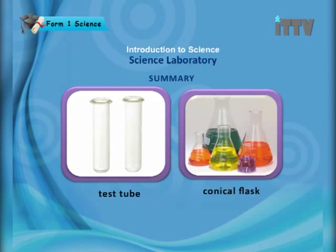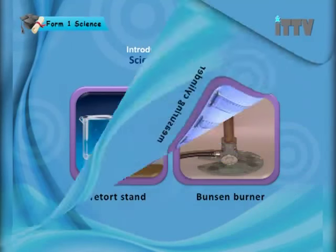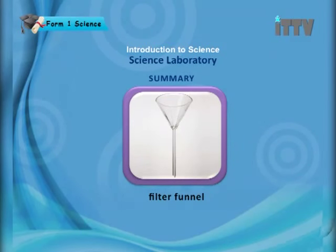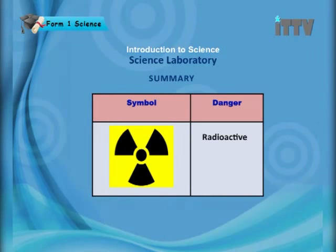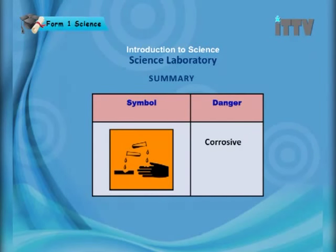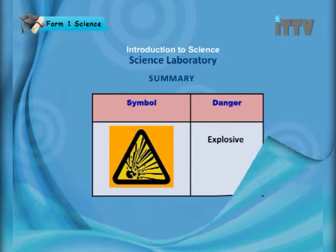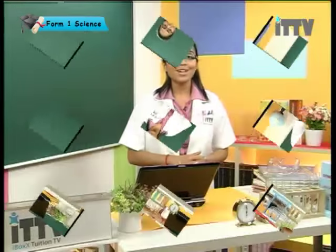Let's do a quick roundup: apparatus covered include the test tube, conical flask, beaker, measuring cylinder, retort stand, Bunsen burner, and filter funnel. Hazardous symbols include flammable, radioactive, corrosive, toxic or poisonous, explosive, and irritant. I hope you can remember all these symbols and apparatus found in the science laboratory. That's all for today — see you in the next lesson on IT TV. Take care and bye!